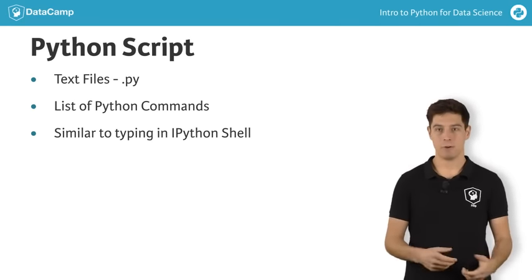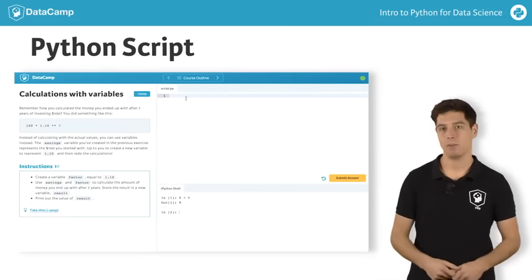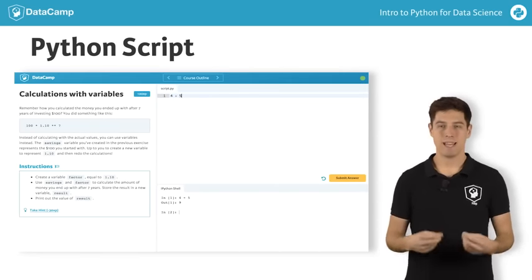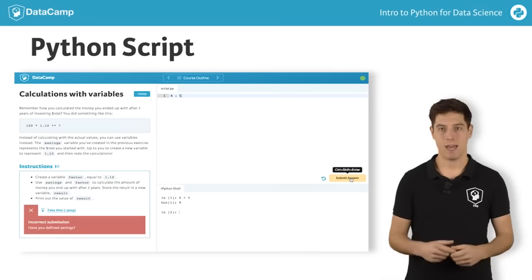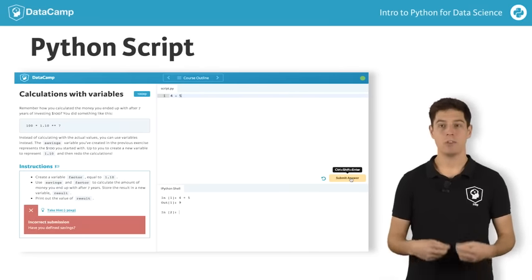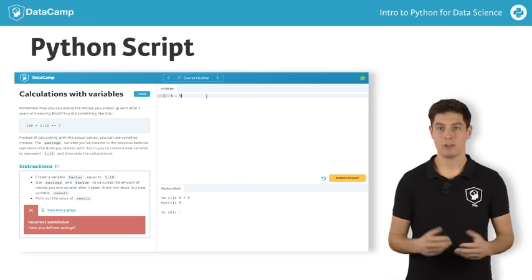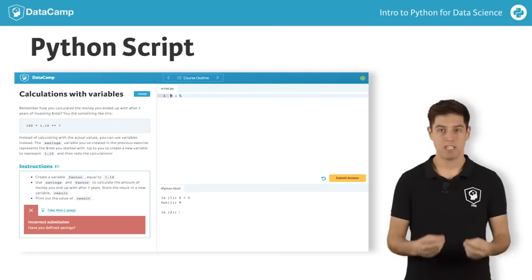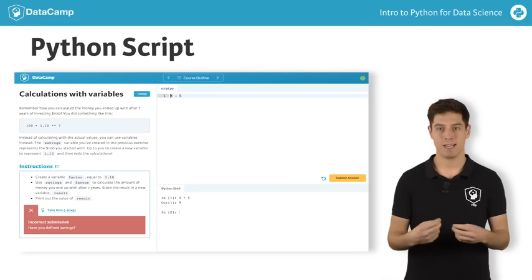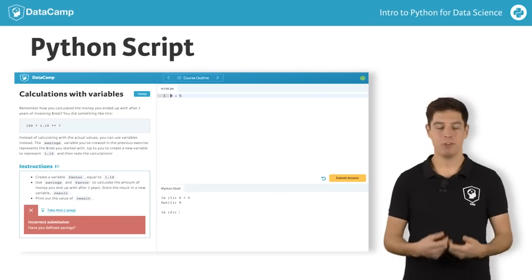Let's put the command from before in a script now that can be found here in DataCamp's interface. The next step is executing the script by clicking Submit Answer. If you execute the script in the DataCamp interface, there's nothing in the output pane. That's because you have to explicitly use print inside scripts if you want to generate output during execution.